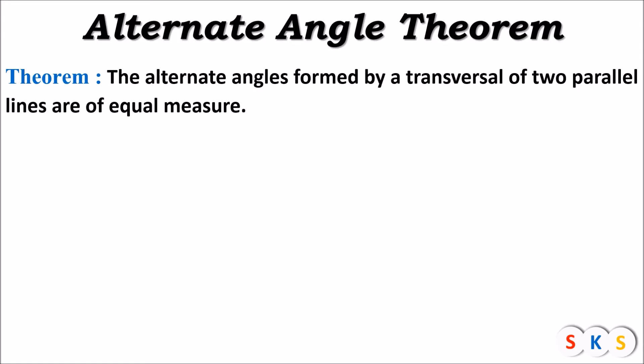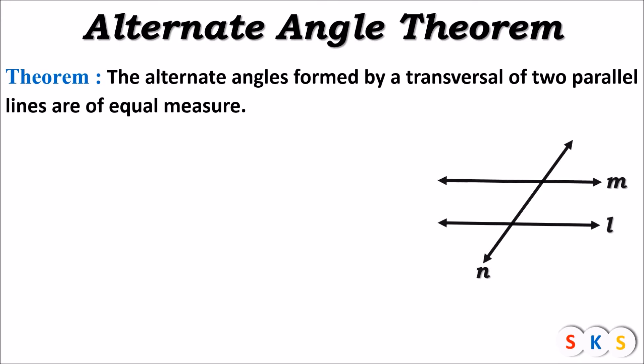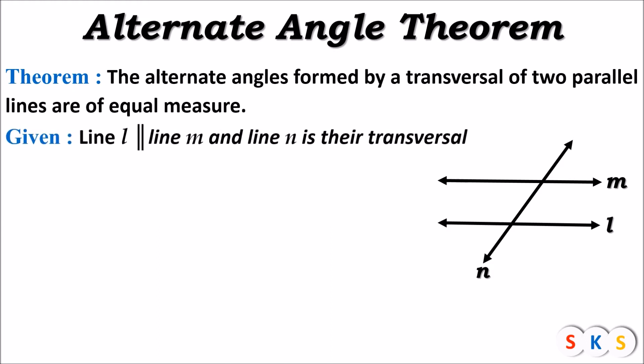What is given in this statement? It is given that there are two parallel lines, both intersected by a transversal, and the alternate angles formed in this figure are of equal measures. We will take two parallel lines — you can see line L and line M are parallel to each other, and line N is a transversal of those two parallel lines.